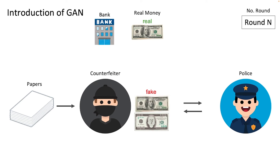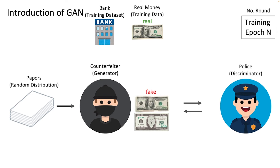Now let's replace the characters with some deep learning terminology. In our scenario, the counterfeiter is called the generator, as it is trying to generate something. The police officer is called the discriminator, as it is trying to discriminate something. The real money, or actual currency in our game, is the training data. The paper we provided to the counterfeiter is some random noise sampled from, for example, a Gaussian distribution.